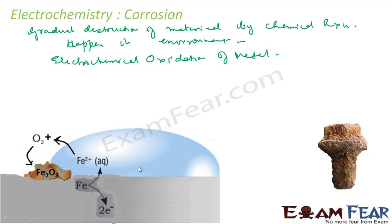Corrosion slowly coats the surface of the metallic object with oxides. For example, iron is slowly coated with oxides — this is Fe2O3, whatever you see. Rusting of iron, tarnishing of silver, in the copper object you see the green coating comes — they are all examples of corrosion.